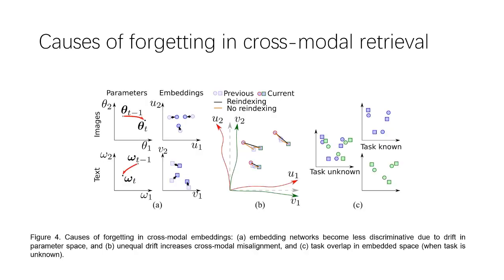In total, we have summarized three different causes of degradation in cross-modal retrieval. The first is drift due to parameters. The second is whether we need to re-index or not. The third is whether we know about the tasks, because sometimes there are overlapping feature spaces.